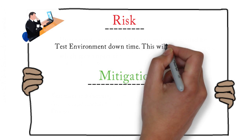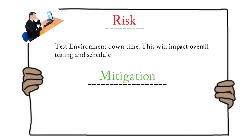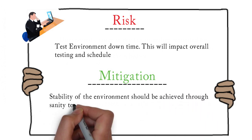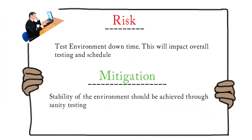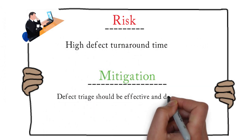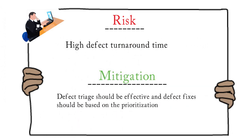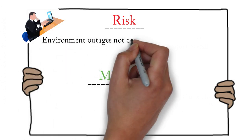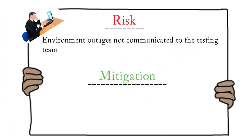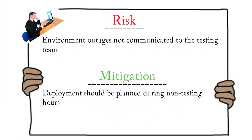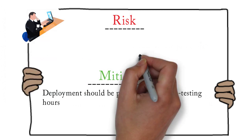Test environment downtime is a risk that impacts overall testing and schedule. The mitigation plan can be achieved by stabilizing the environment through sanity testing. For the risk of high defect turnaround time, defect raises should be effective and defect fixes should be based on prioritization — this should be the mitigation plan. If environment outages are not communicated to the testing team, it can cause many problems. So the mitigation plan can be that deployments should be planned during non-testing hours.